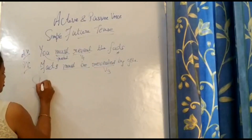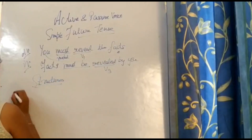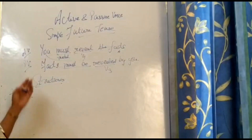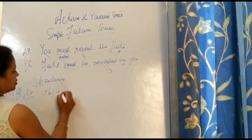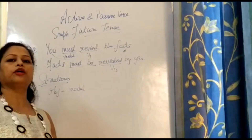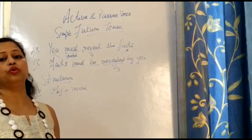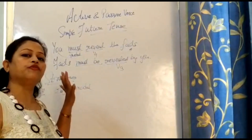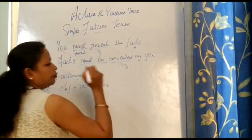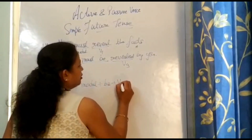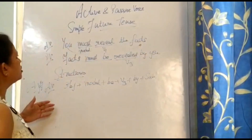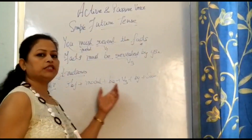Let's learn the structures. Affirmative sentence in active voice: the object comes in the beginning, plus modal — it could be will, shall, should, must, can, could, might, ought to, used to. Any of the modals can be used in the same format. So the passive structure is: object + modal + be + V3 + by + subject, ending in a full stop. For example: 'You must reveal the facts' becomes 'The facts must be revealed by you.'